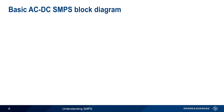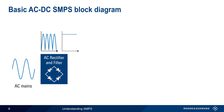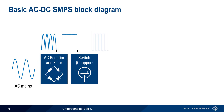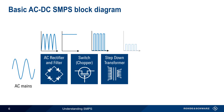Let's go through this again graphically. AC mains voltage is first rectified, and then filtered, to produce high voltage DC. A switch, or chopper, converts this high voltage DC into a high voltage, high frequency pulsed signal, which is then stepped down to a lower voltage level using a transformer.